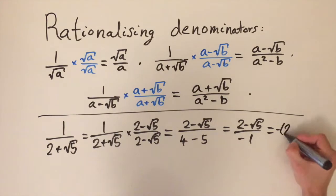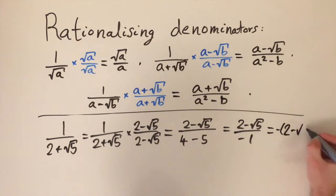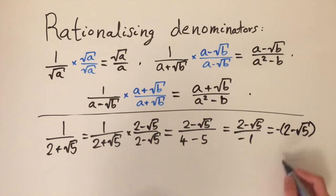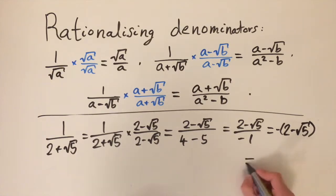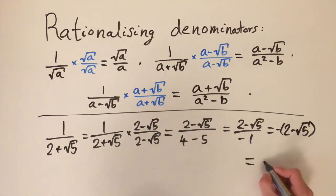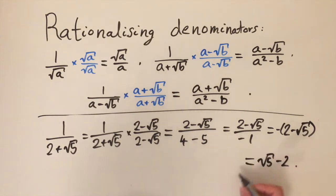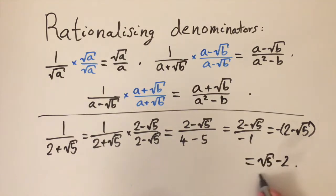That gives us minus 2 minus the square root of 5, and distributing the negative we get the square root of 5 minus 2. That is the simplified form — and it's not even a fraction, which is even better.